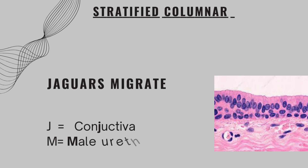Next we have stratified columnar epithelium. There are two examples: conjunctiva and male urethra. The mnemonic is: Jaguars Migrate. J stands for conjunctiva, and M stands for male urethra.